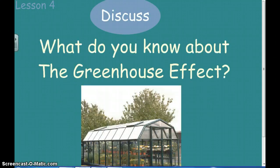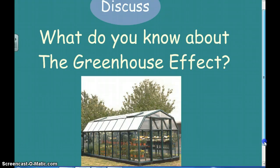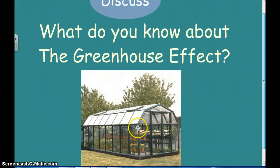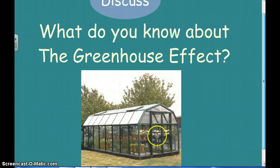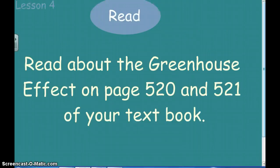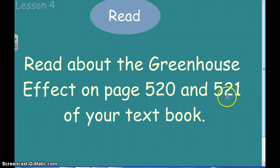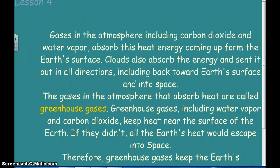What do we know about the greenhouse effect? Most people know that a greenhouse is a glass building where people can grow plants even in cooler weather, because the sun's energy comes in through the glass and heats up the inside to a temperature where plants can grow. Turn in your book to pages 520 and 521, or go to those pages online, to read about the greenhouse effect.